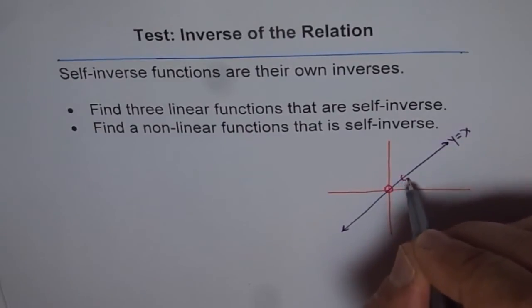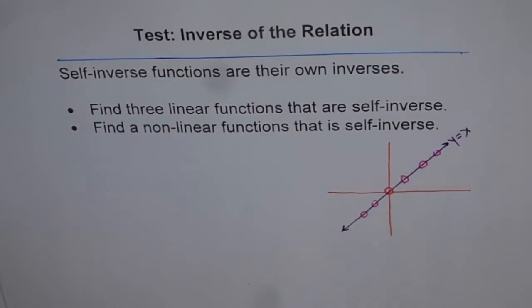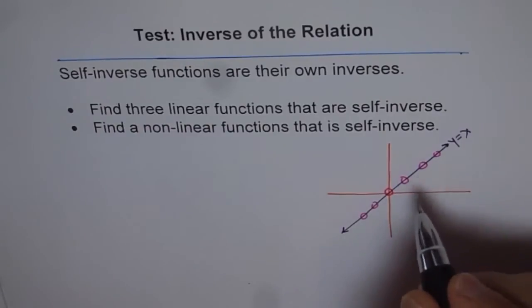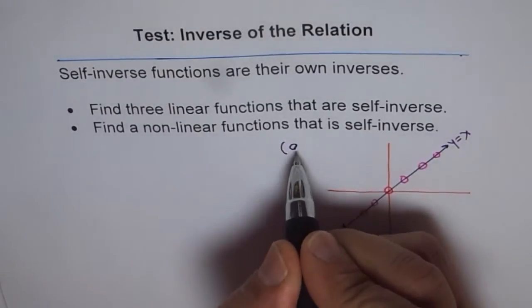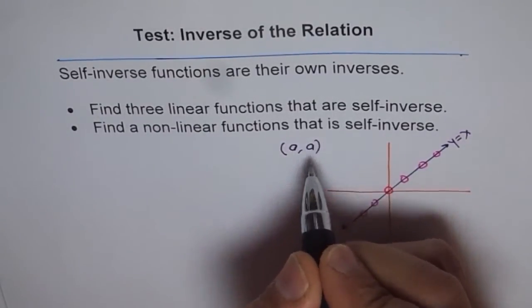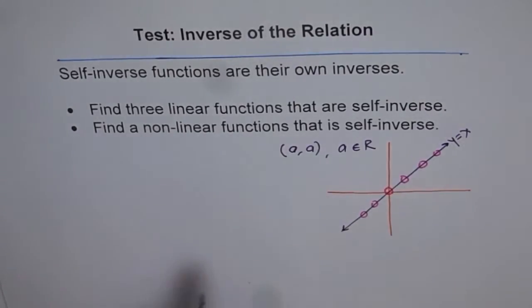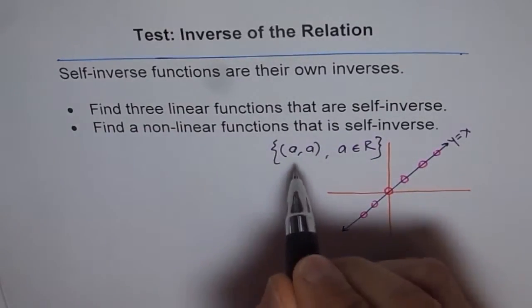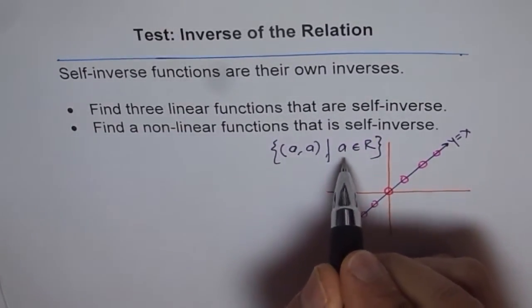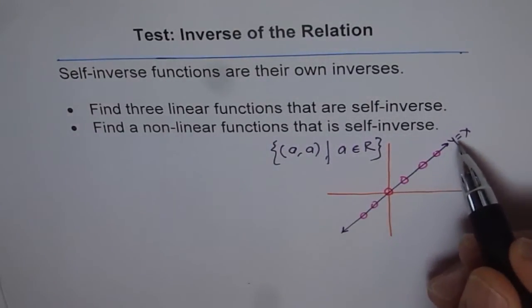For example, we can have a point which is there on the line itself, like this. Points like this. What I am trying to say, that this set of points is like, all the set of points where the value of x and y is same, a and a. Where a belongs to real numbers. If that represents your function, it is of this form where a belongs to real numbers. Then, it is a whole line, which is y equals to x itself.